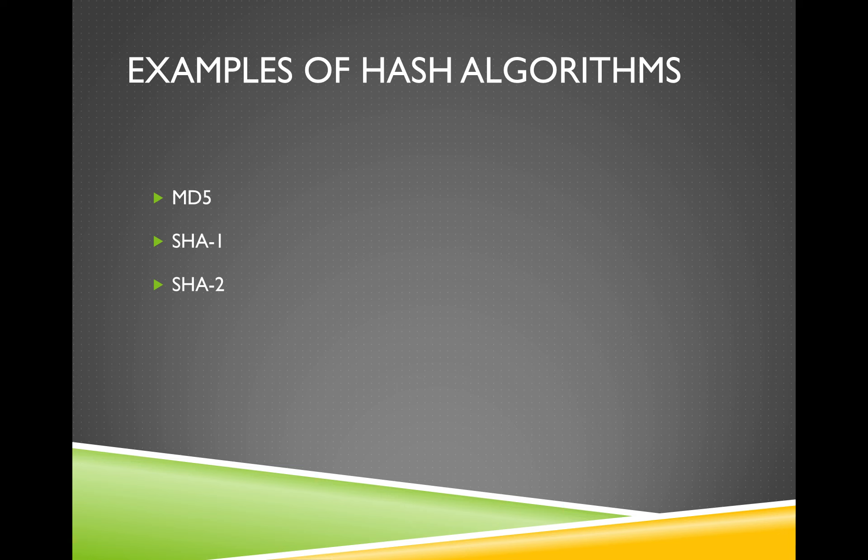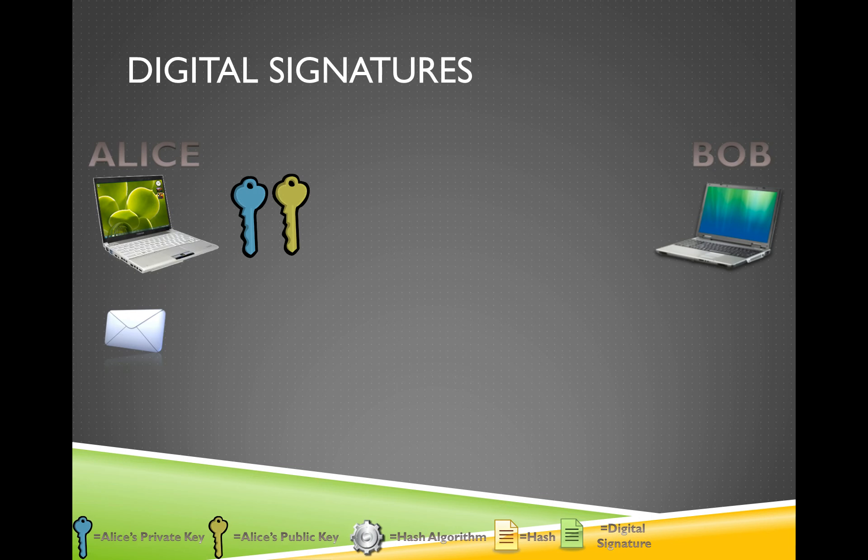SHA2 is what the industry is moving towards, especially from a security perspective. SHA2 includes things like SHA256, SHA384, and SHA512. However, you don't see them a lot, especially in public key cryptography these days, simply because there are a lot of compatibility issues with operating systems and software, including some of our own. That's why you don't see SHA2 used too often these days.